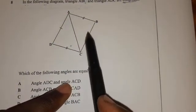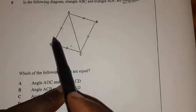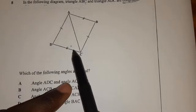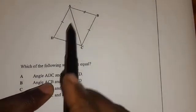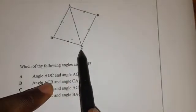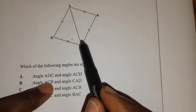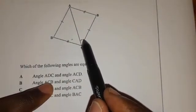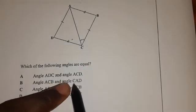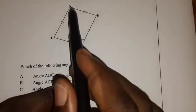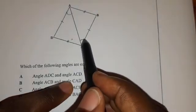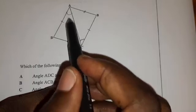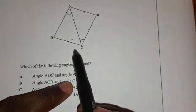No, this angle cannot be equal to this angle. Then let's move to the next one. Angle ACB. Angle ACB, meaning this angle. This angle here. So this angle here, indeed, it is equal to this angle here.